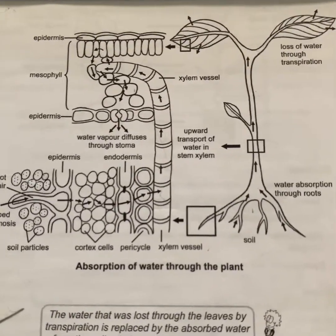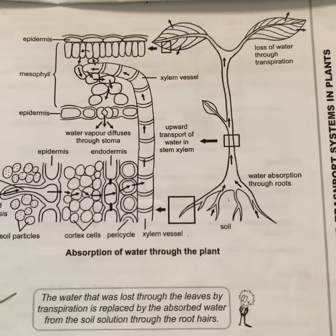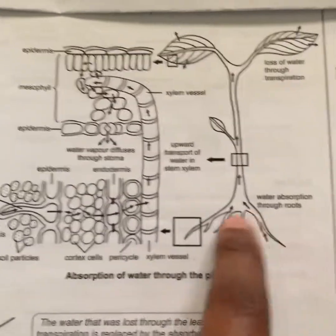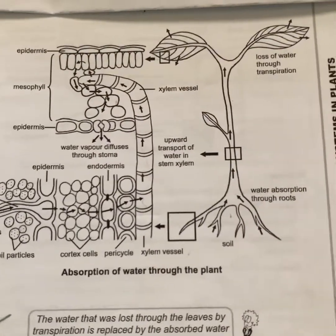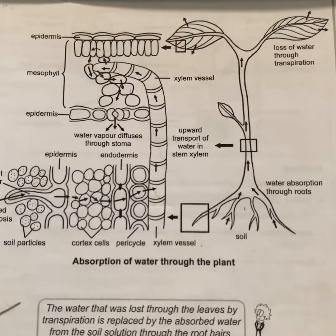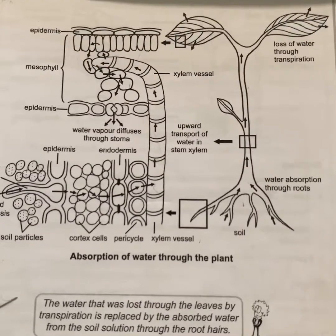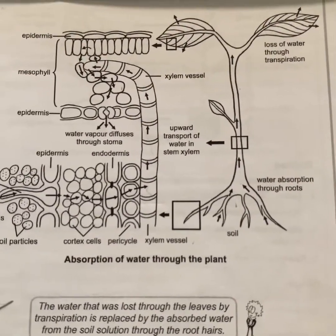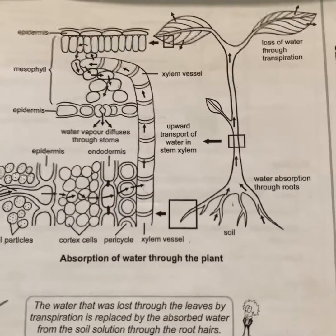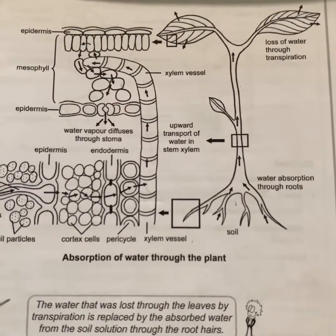The second force involved in upward transport is root pressure. Root pressure develops due to the continuous influx of water from the soil. As water moves into the roots, the turgor pressure in the vacuole increases, and due to osmosis, water moves from a high concentration in the roots to a low concentration in the stem. Root pressure is not strong enough to push water high up in the stem, which is where the third force comes in.